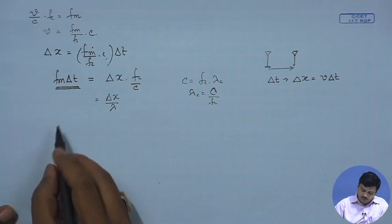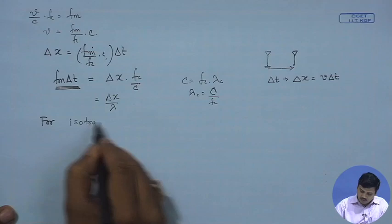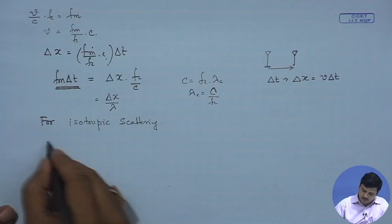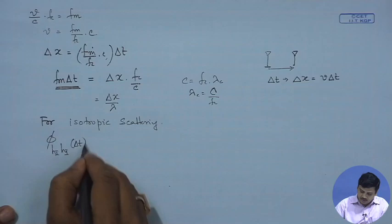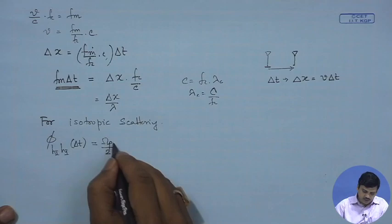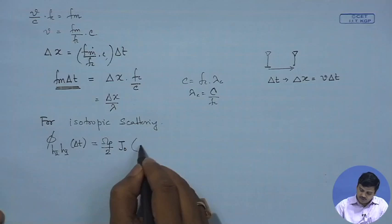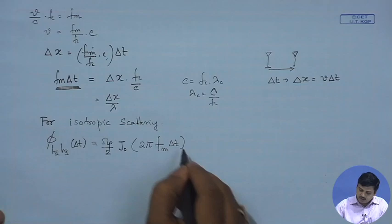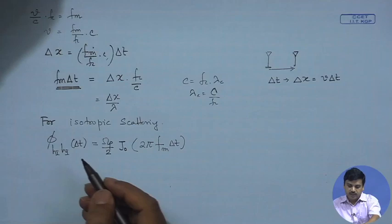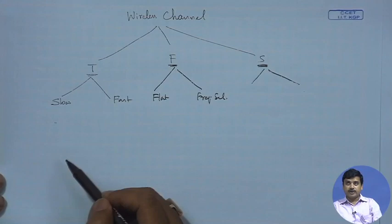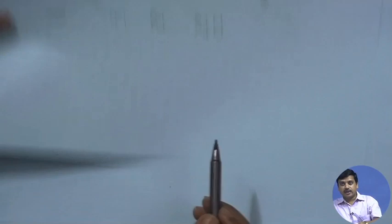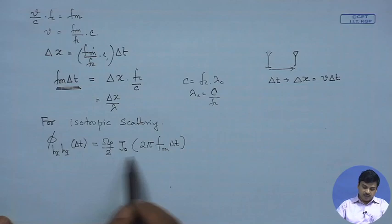This product — f_m times delta_t expressed as delta_x / lambda — is something you have encountered before. For isotropic scattering, the correlation phi_{h_i, h_i}(delta_t) equals (Omega_p / 2) J_0(2 pi f_m delta_t), where Omega_p is the total received power and J_0 is the Bessel function of the first kind of zeroth order. This expression was derived earlier when we studied the flat fading condition and looked at the Doppler spectrum and its correlation function.